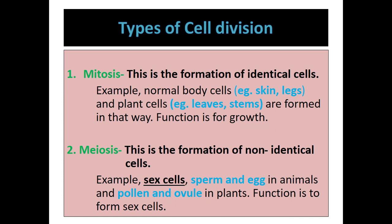Mitosis takes place in normal body cells. For animals, examples include the skin, leg, stomach, and intestines. For plants, this process takes place in normal plant cells like those of the leaves, stems, and branches. The main function of mitosis is growth and repair.